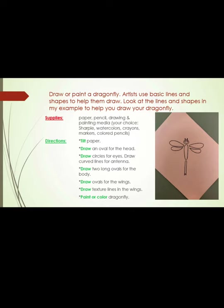Directions: Tilt your paper. Draw an oval for the head. Draw circles for the eyes. Draw curved lines for the antenna. Draw two long ovals for the body. Draw ovals for the wings. Draw texture lines on the wings. Then paint or color your dragonfly.